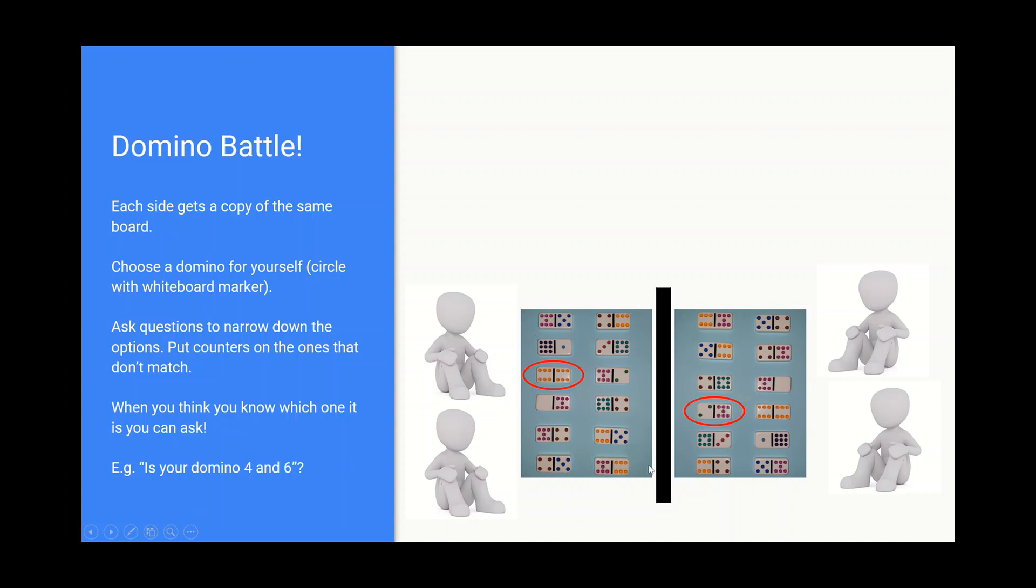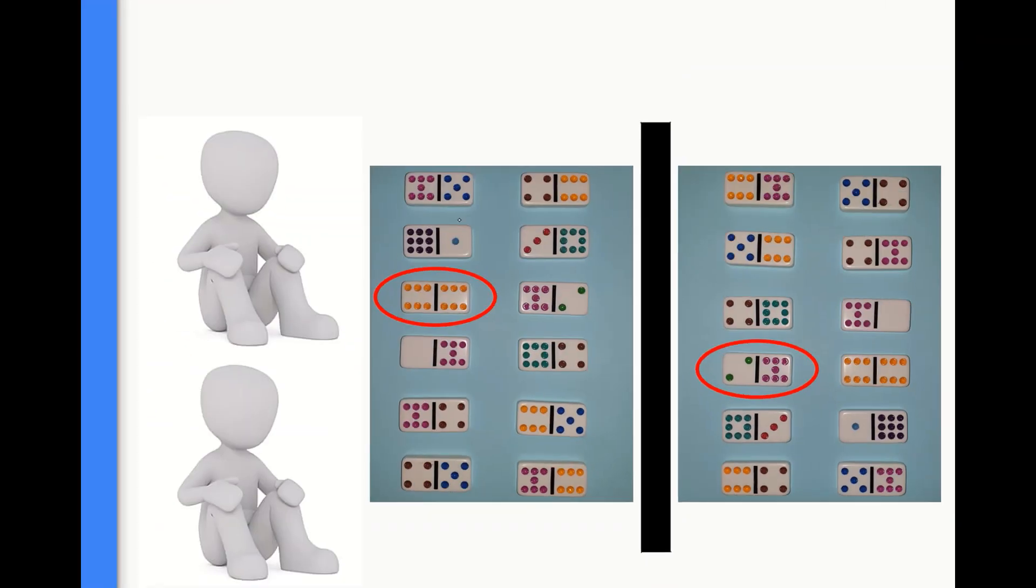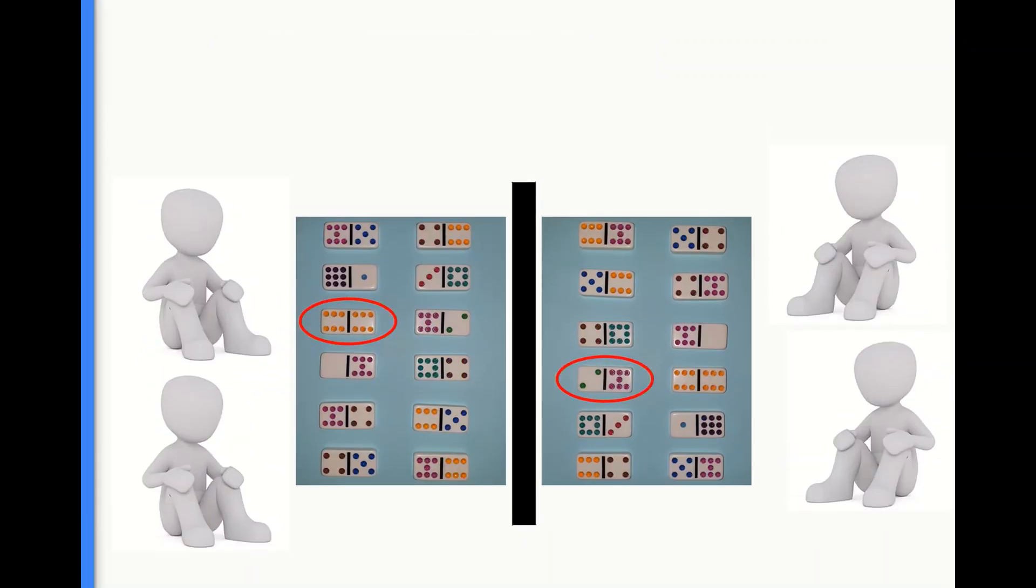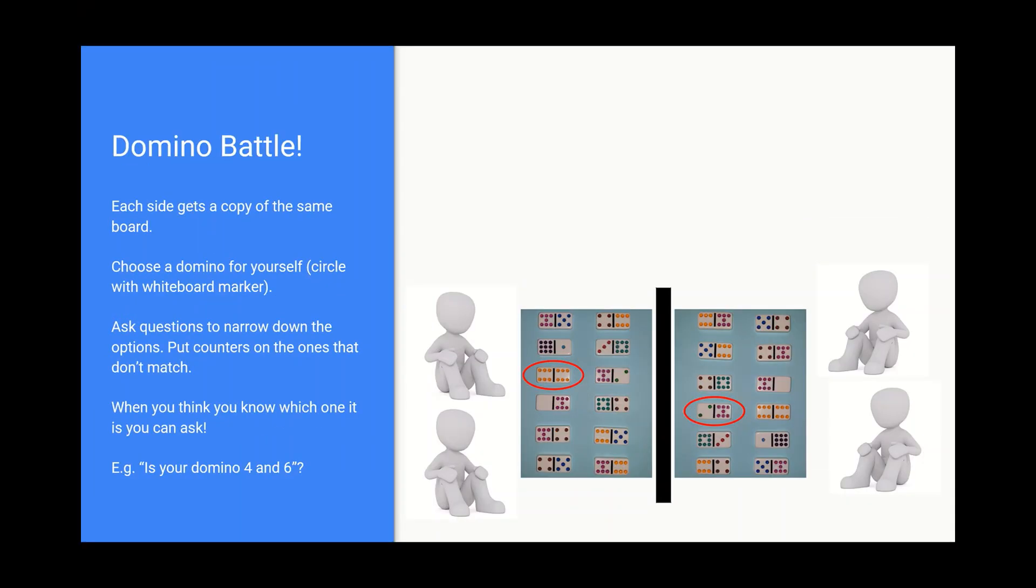And then what we do is we play domino battle. So I have these games here laminated. And this is the example I have of how to play the game. So with your partner, choose a domino. For example, this person on the left here. I'm going to zoom in here. These partners here have picked the double six. And the people on the other side here have picked the six and the two. And this is their barrier. So they can't see each other there. And then they really need to think about questions to ask each other where they can just put counters or a block or use a whiteboard marker to mark off the ones that we know it's not. And they do this by asking good questions. That's the point. They need to ask questions.